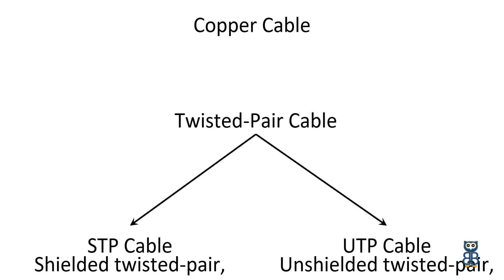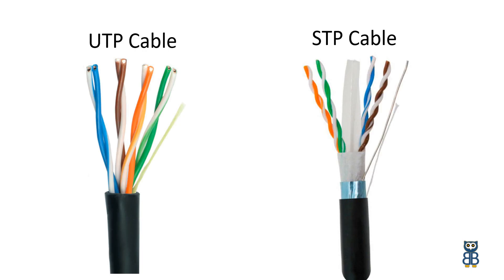Each pair has one solid color and one striped color wire. Solid colors are blue, brown, green, and orange. In the striped color, the solid color is mixed with white. The twisted pair cable was primarily developed for computer networks and is also known as an Ethernet cable. Almost all modern LAN computer networks use this cable.